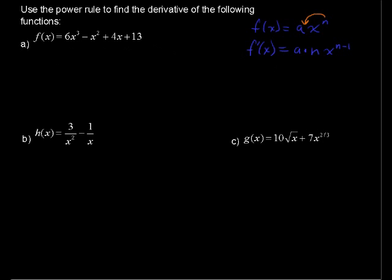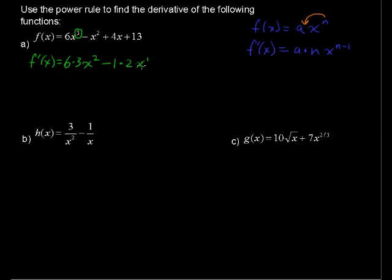Let's put that into action. For the first function, f'(x) equals 6 times 3 — because we have an exponent of 3 — times x to the second power. Then minus 1 times 2 times x to the first, keeping in mind that the minus sign is like saying minus 1 times. When we rewrite that, we do not write the exponent of 1, but I wanted to show what is happening here.